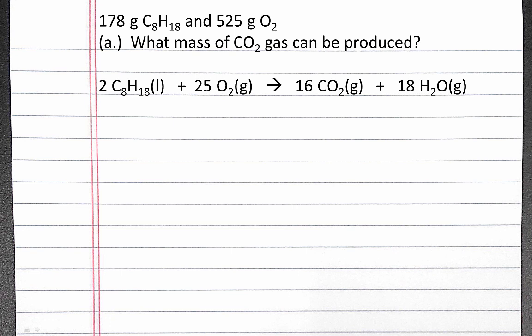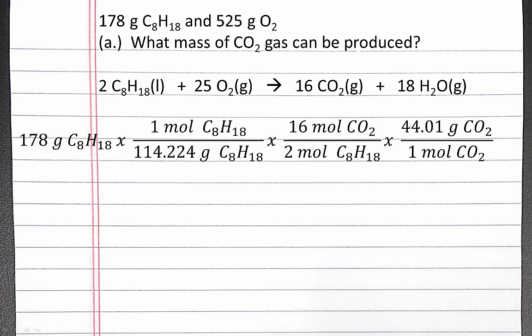First, we'll use dimensional analysis to determine the mass of CO2 gas produced. We're given amounts of two different reactants, so we know this is a limiting reagent problem. We'll have to use each reactant to determine how much carbon dioxide gas can be produced. To determine how much carbon dioxide gas can be produced from C8H18, we begin with our 178 grams of C8H18 and use dimensional analysis to convert to grams of carbon dioxide.